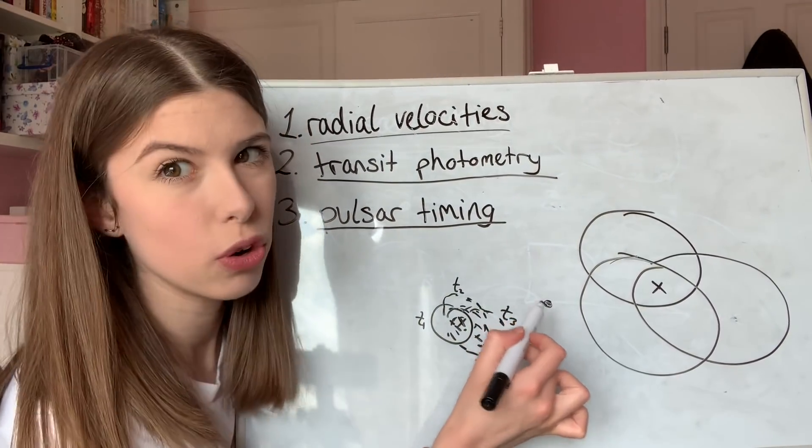We've actually only detected seven exoplanets in total via this pulsar timing method, which would suggest that it's not that common for exoplanets to be orbiting pulsars, relative to the number of exoplanets that are orbiting solar-type stars.